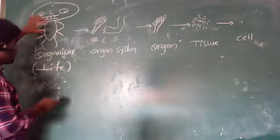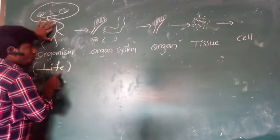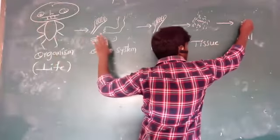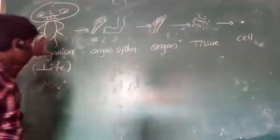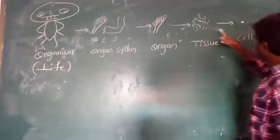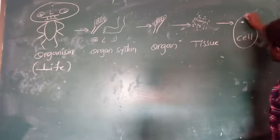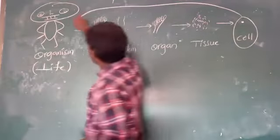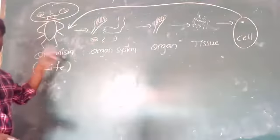To form an organism or life, what is the basic unit? The cell is the basic unit. So cell is the basic unit of life.